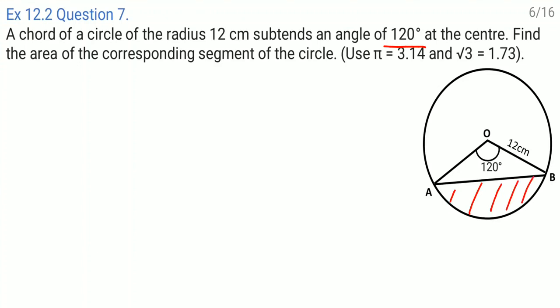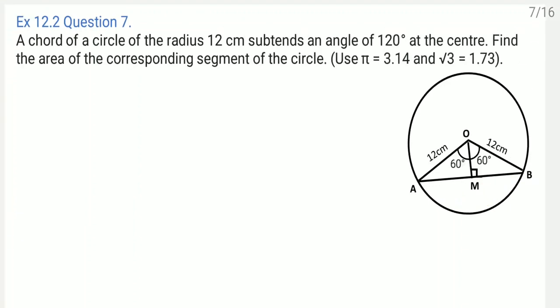This triangle is not an equilateral triangle or a right angle triangle, so it is difficult to find out its area directly. For that we need to do some construction. We draw OM perpendicular to AB. Observing both triangles, they are congruent by RHS.